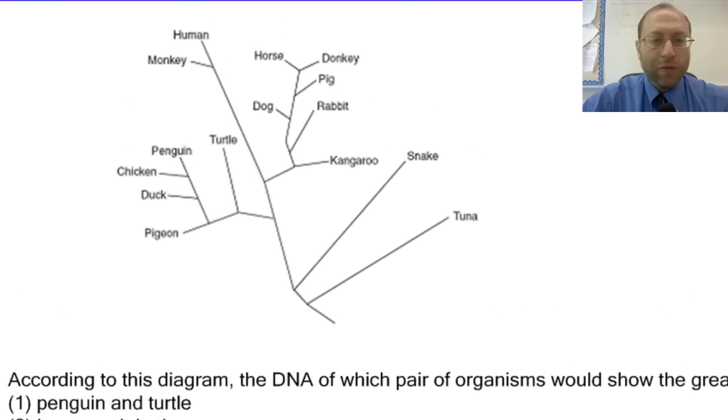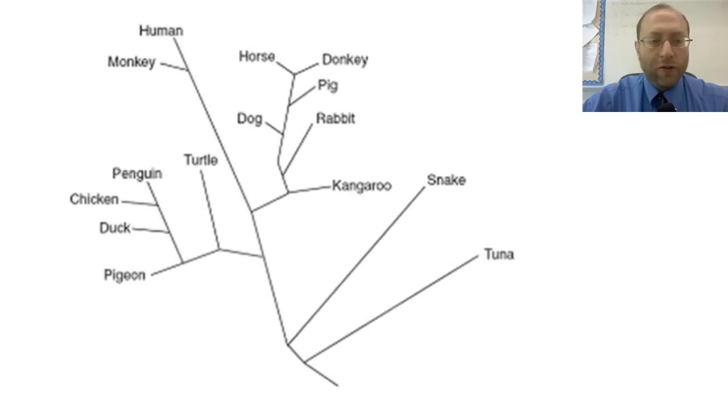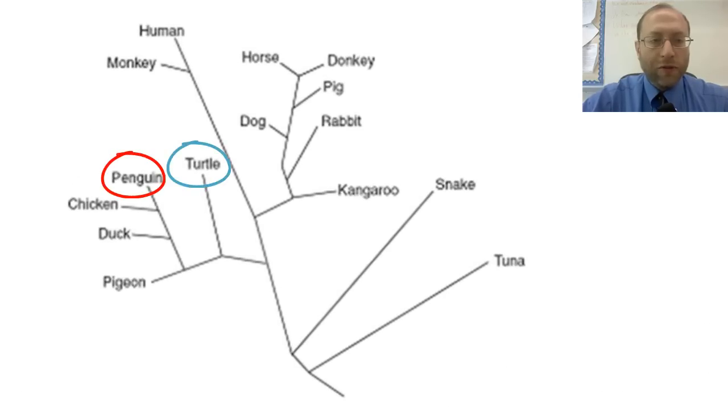This is what a cladogram usually looks like, where you see a whole bunch of stick lines leading out to different organisms. According to the diagram, the DNA of which pair of organisms would show the greatest similarity? These would be ones where they would be very close together, where their most recent common ancestor would be where you'd have to not go quite so far. For penguin and turtle, we have to go through a common ancestor for the chicken, then the duck, then the pigeon, then we come to the branch with the penguin and the turtle. Horse and donkey: we go right from horse and donkey, we're right there at the common ancestor. We don't have to go through any others.